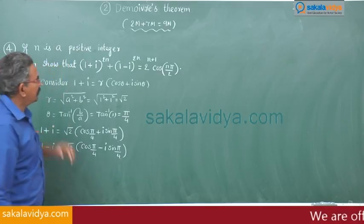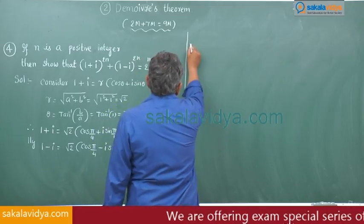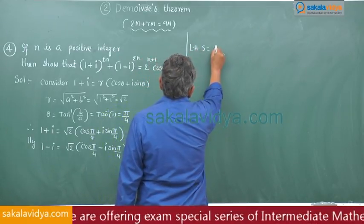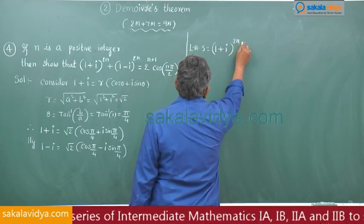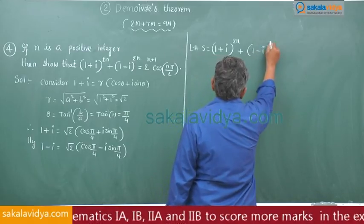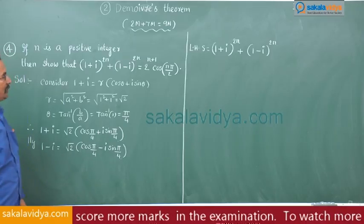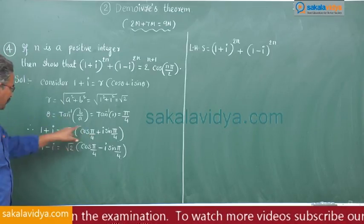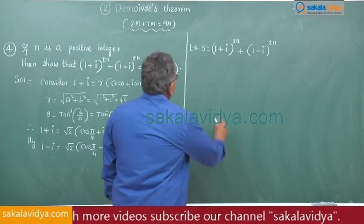Now let us consider the left hand side: (1 + i) to the power of 2n plus (1 − i) to the power of 2n. We substitute the polar forms of 1 plus i and 1 minus i that we have obtained. So 1 plus i becomes root 2 times (cos π/4 plus i sin π/4), and we proceed from here.